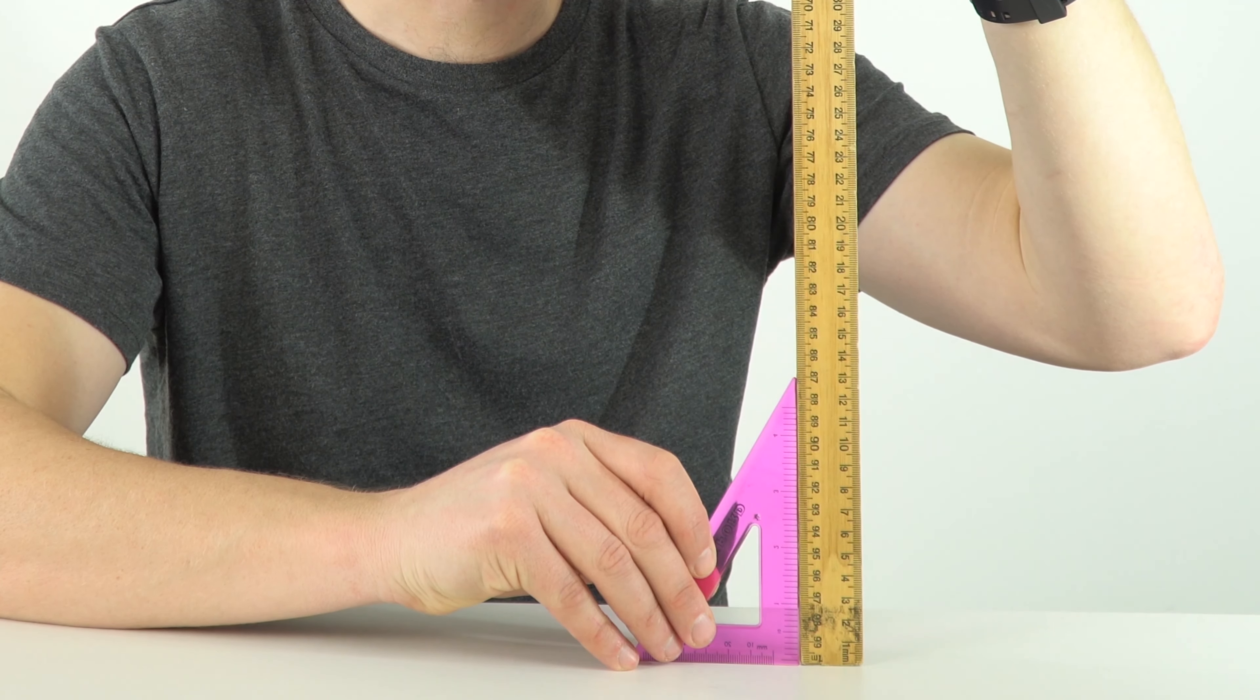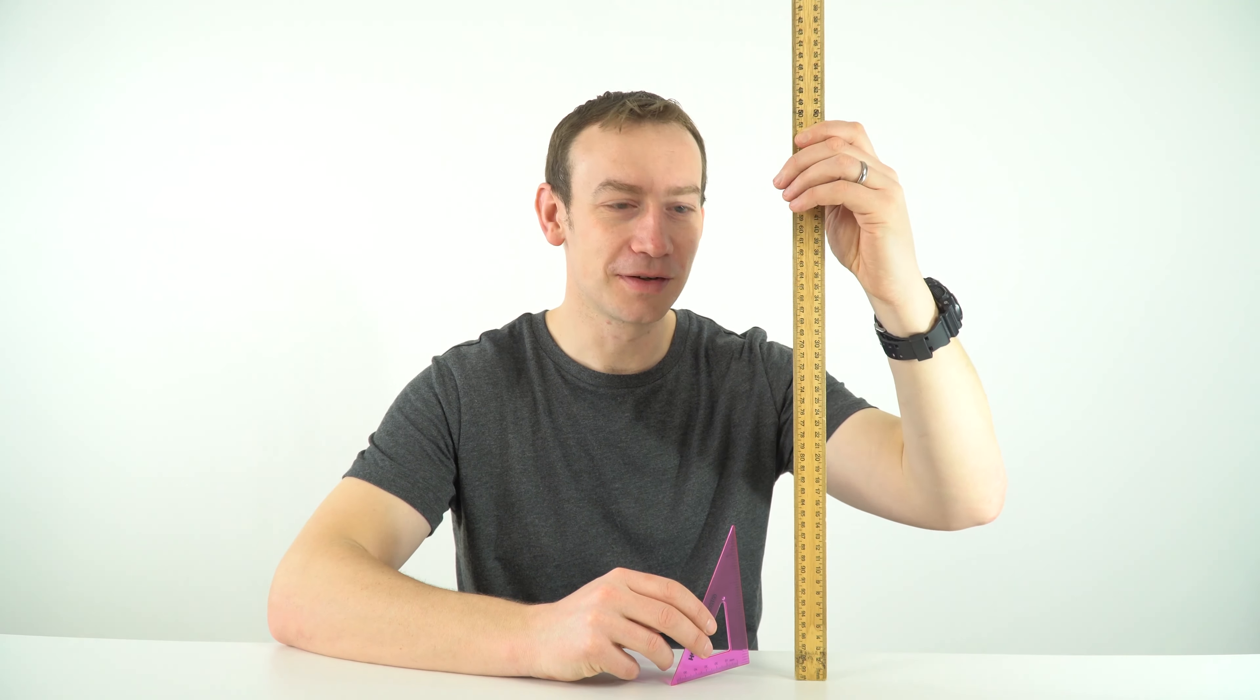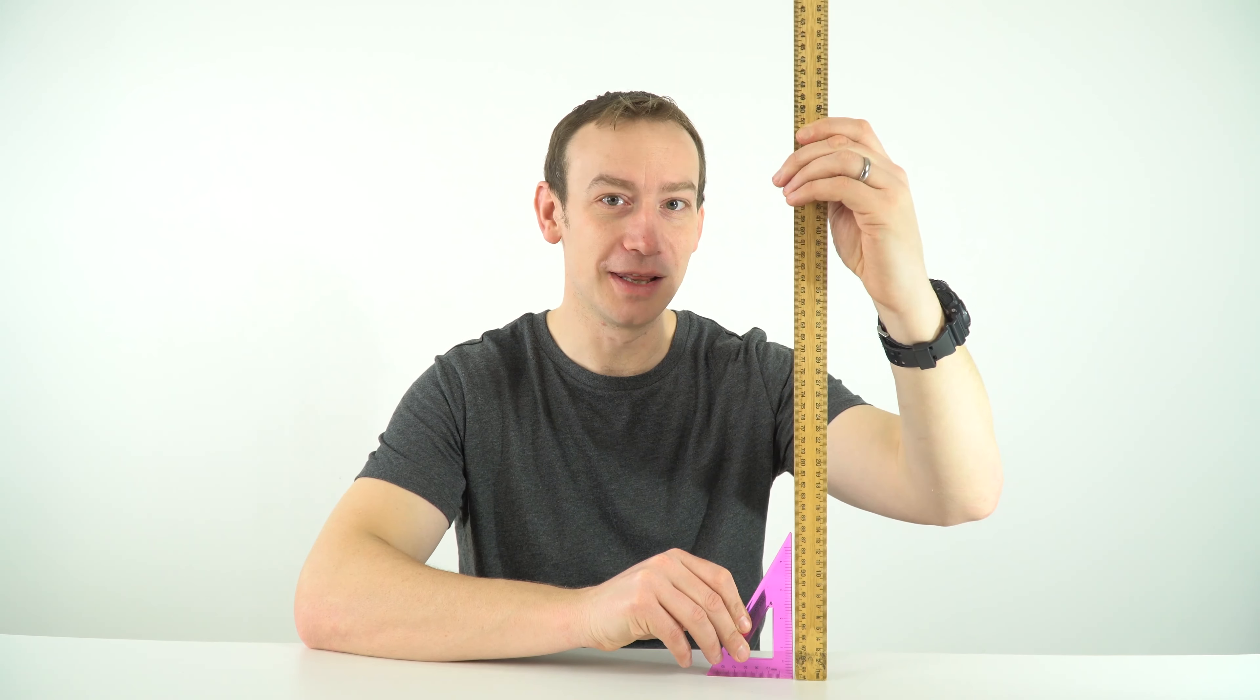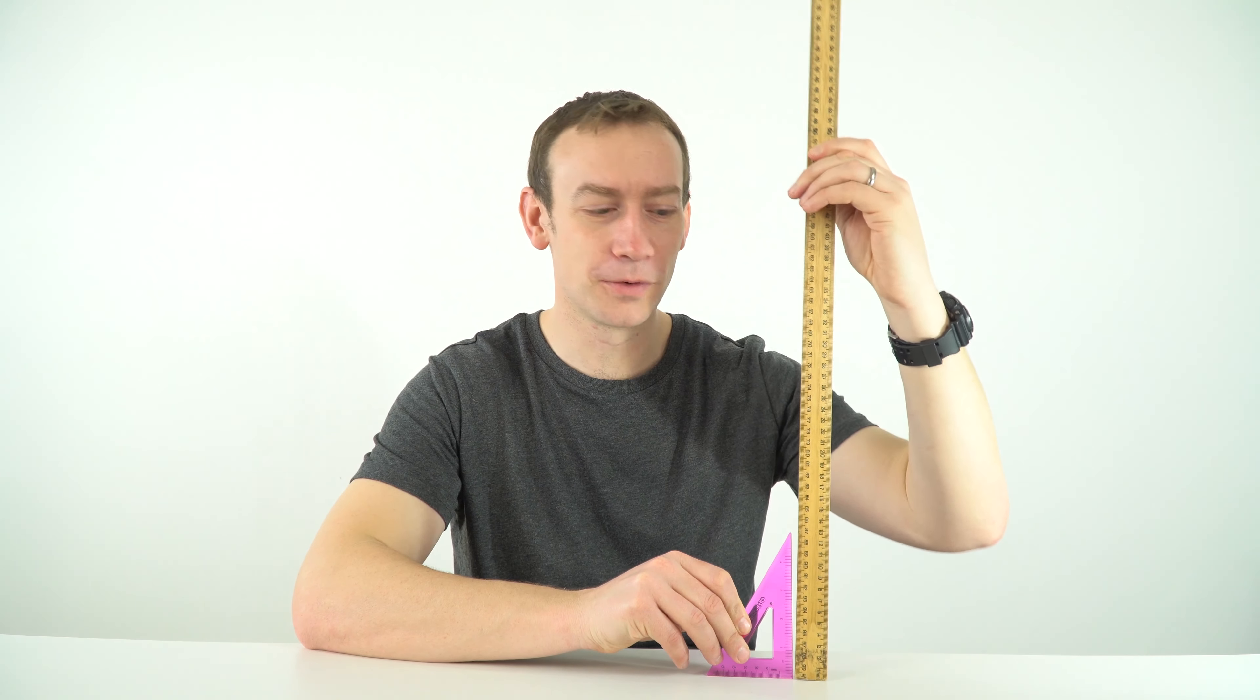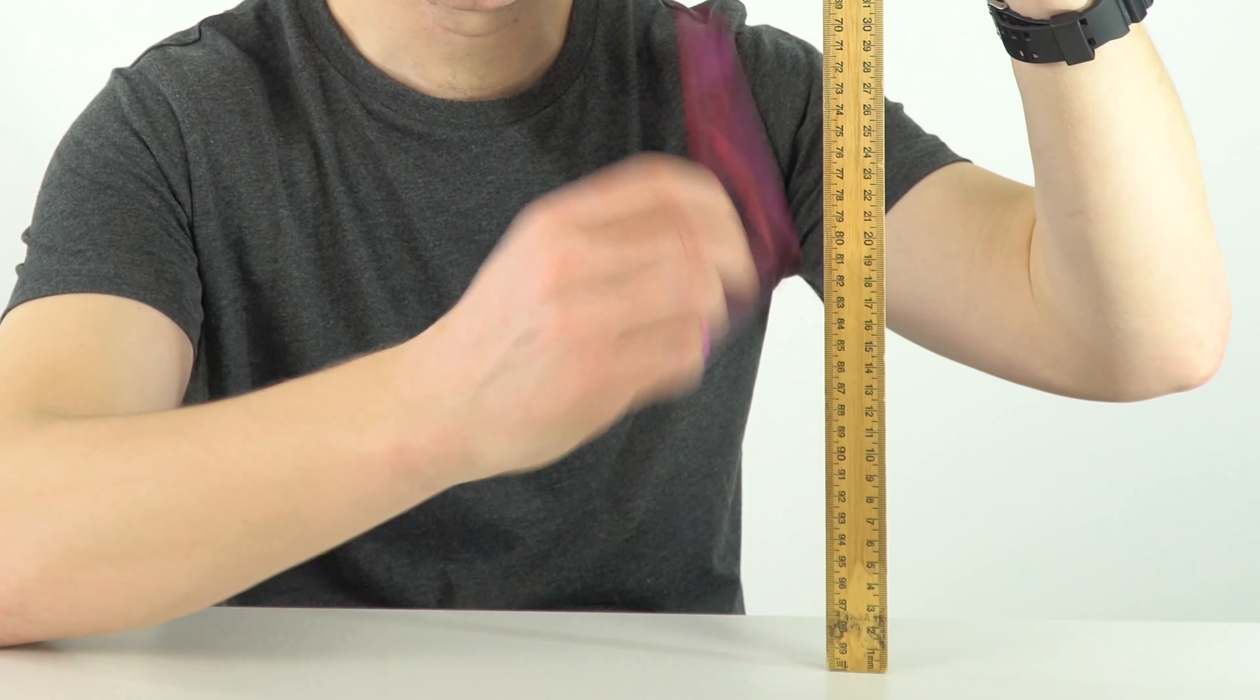And then you take the set square and you put it at 90 degrees, and this is to make sure that even though it might be vertical in this direction, it might be still tilted forwards or backwards. So you then use the set square once again.